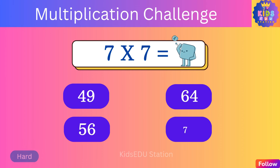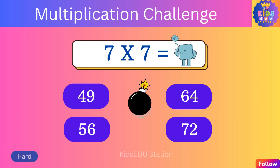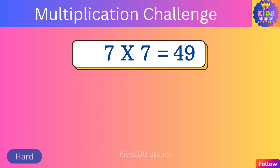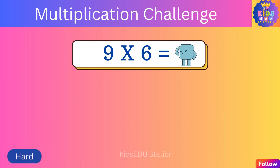Fifty-six, seventy-two. Seven times seven is forty-nine. What is nine times six?